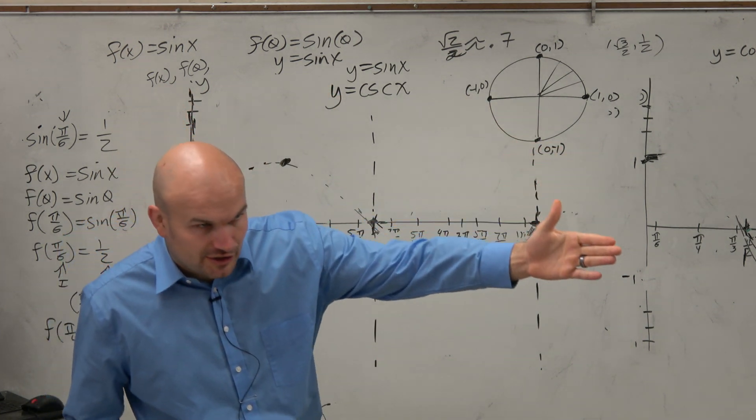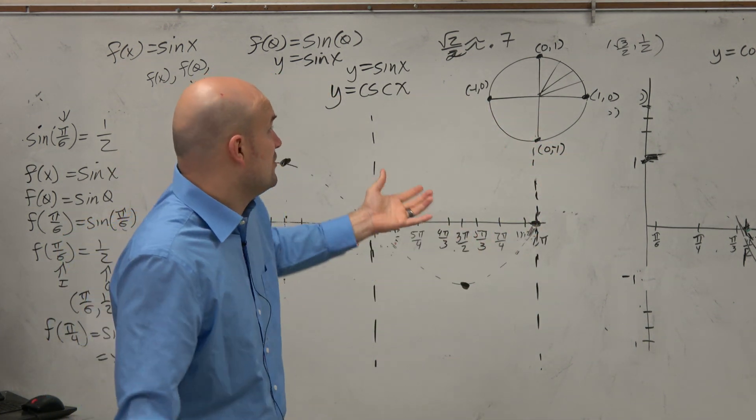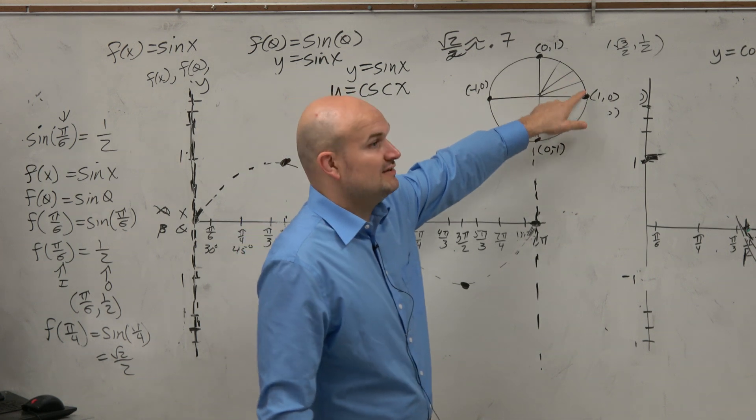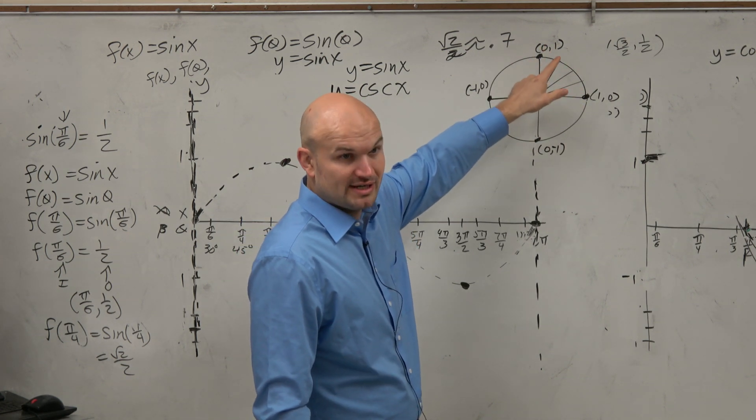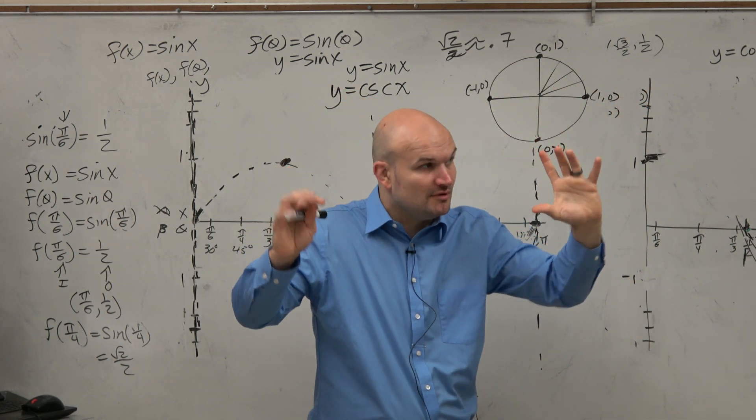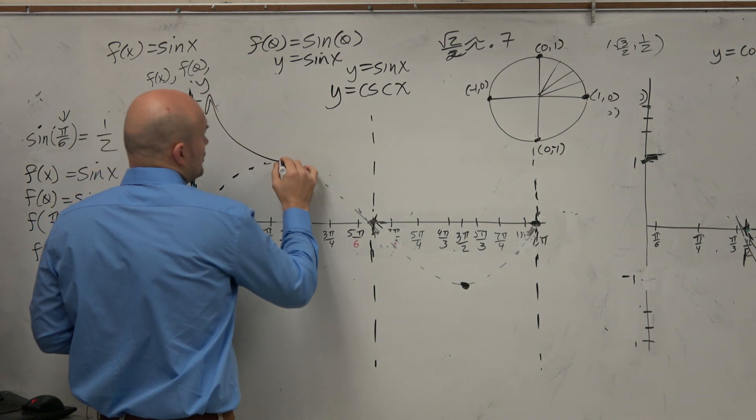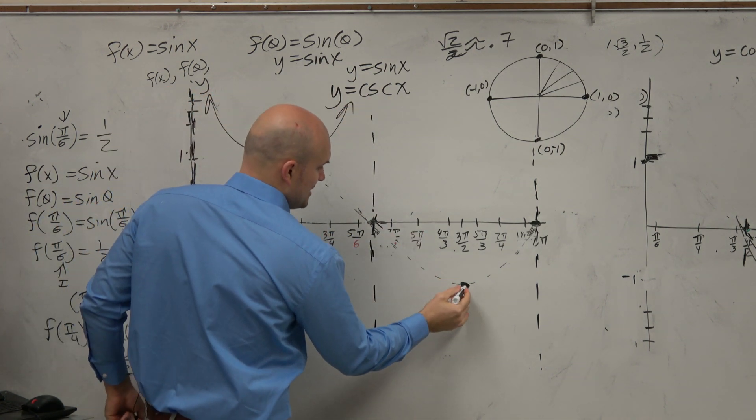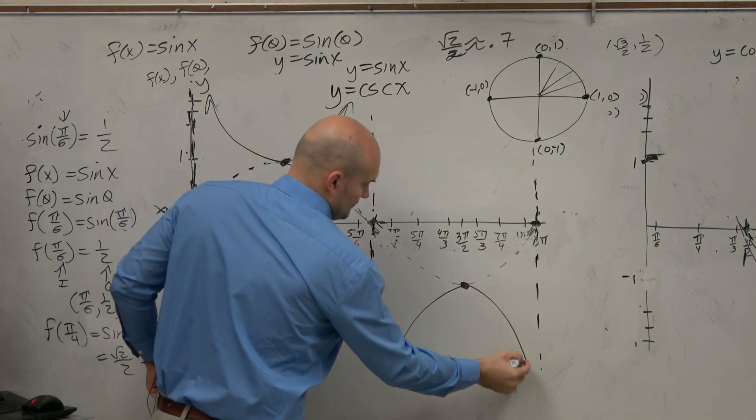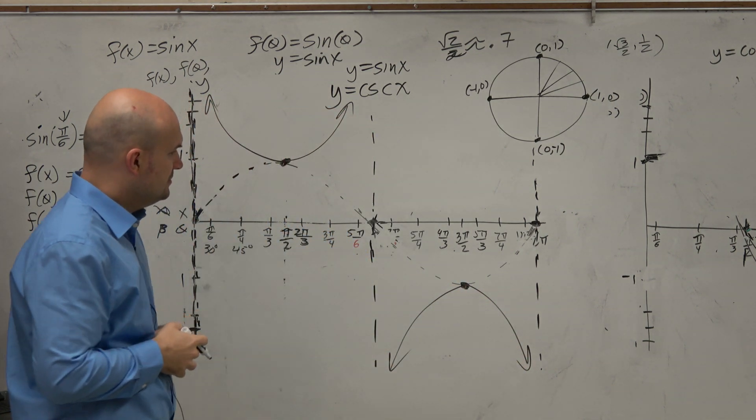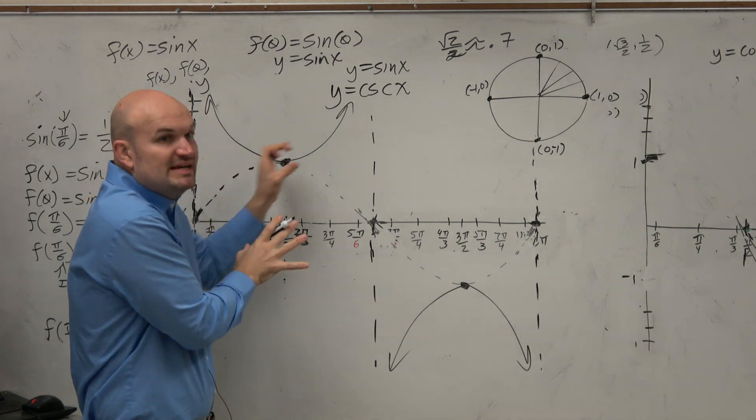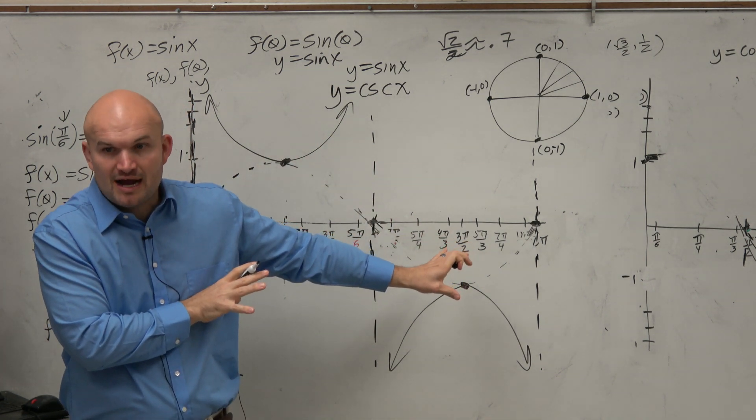We're just using this as an aid to help us understand the cosecant graph. And then, as you can see in your notes, we can easily find these points if we were to go back and find the reciprocal of all the y coordinates, plug them in our calculator and find the decimal values. What we would figure out is that the graph of cosecant takes this shape.